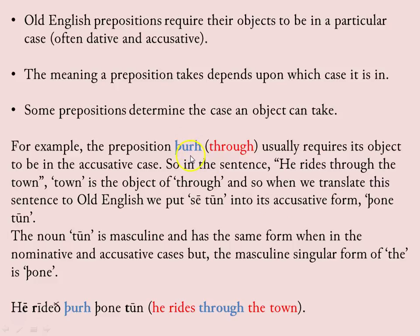For example, the preposition 'thurh,' meaning 'through,' usually requires its object to be in the accusative case — not always, but usually. So in the sentence 'He rides through the town,' 'town' is the object of 'through.' When we translate this to Old English, we put 'tun' (the town) into its accusative form. The definite article goes from 'se' to 'thone,' being masculine. 'Tun' has the same form whether accusative or nominative. So the sentence is: 'He rideth thurh thone tun' — he rides through the town.